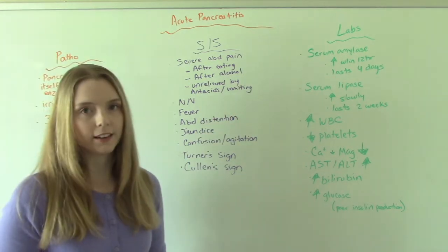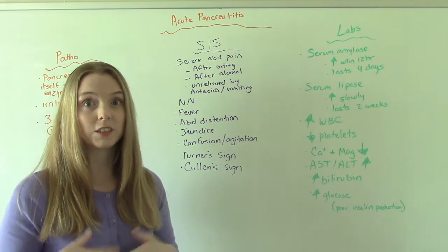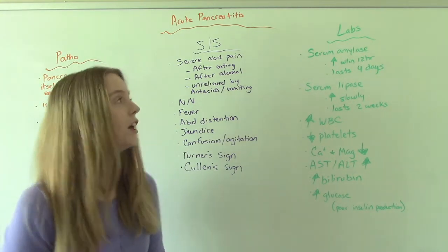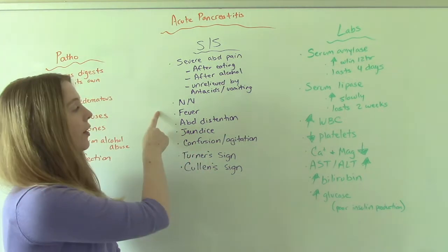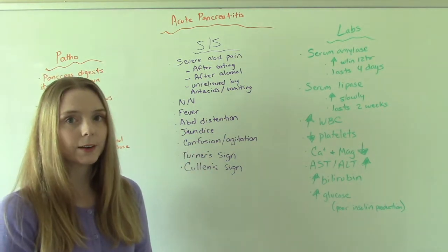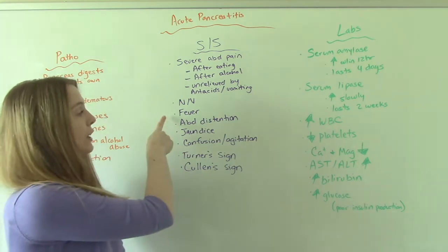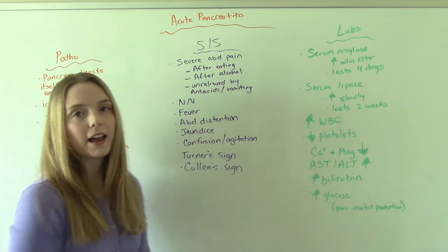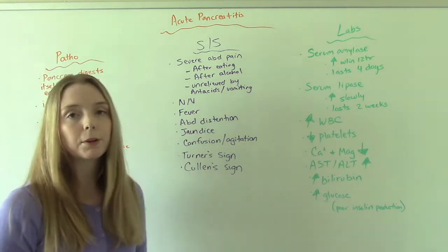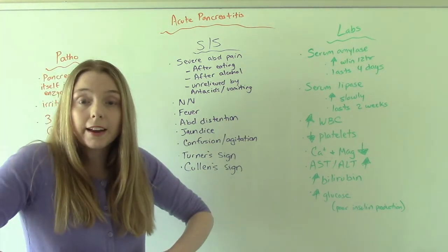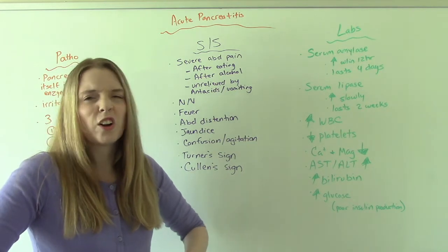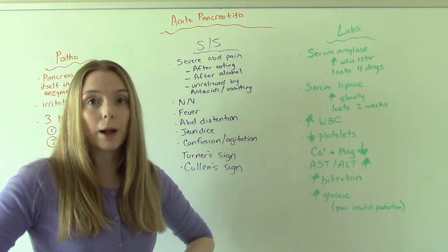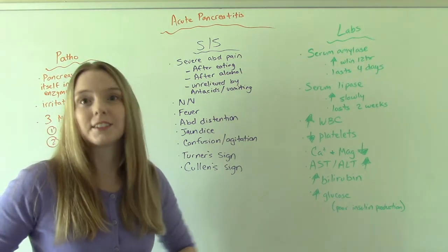Even vomiting doesn't help. Sometimes when we vomit it makes things feel better, but in this case it's not going to help. They'll have nausea and vomiting associated with it. If the cause is an infection, they might have a fever. They'll have abdominal distension — when you palpate their abdomen it's going to be firm and round, and even with light palpation they'll probably jump because it's going to hurt.